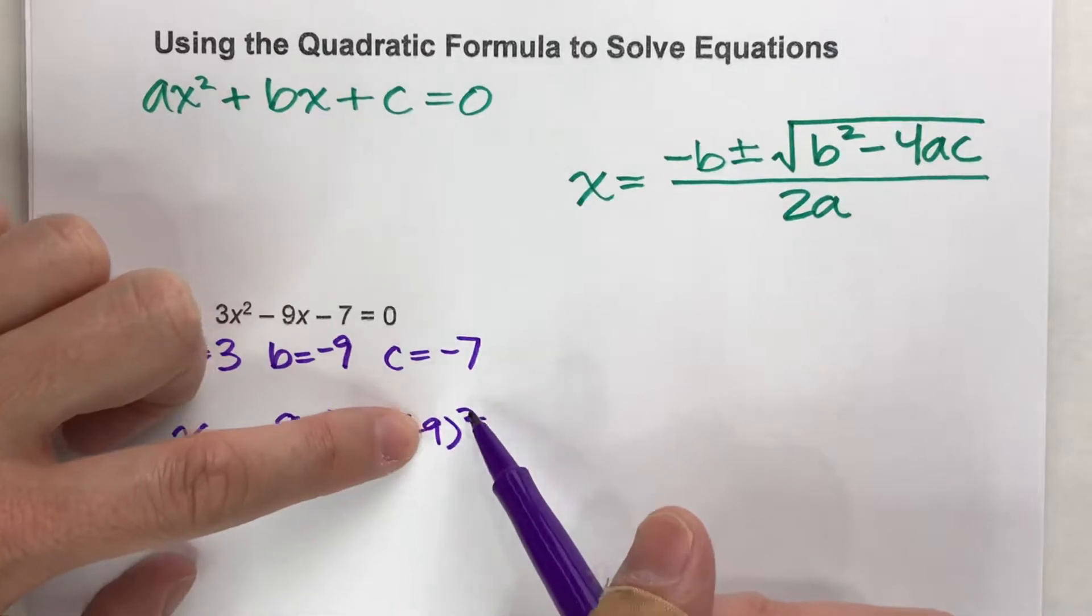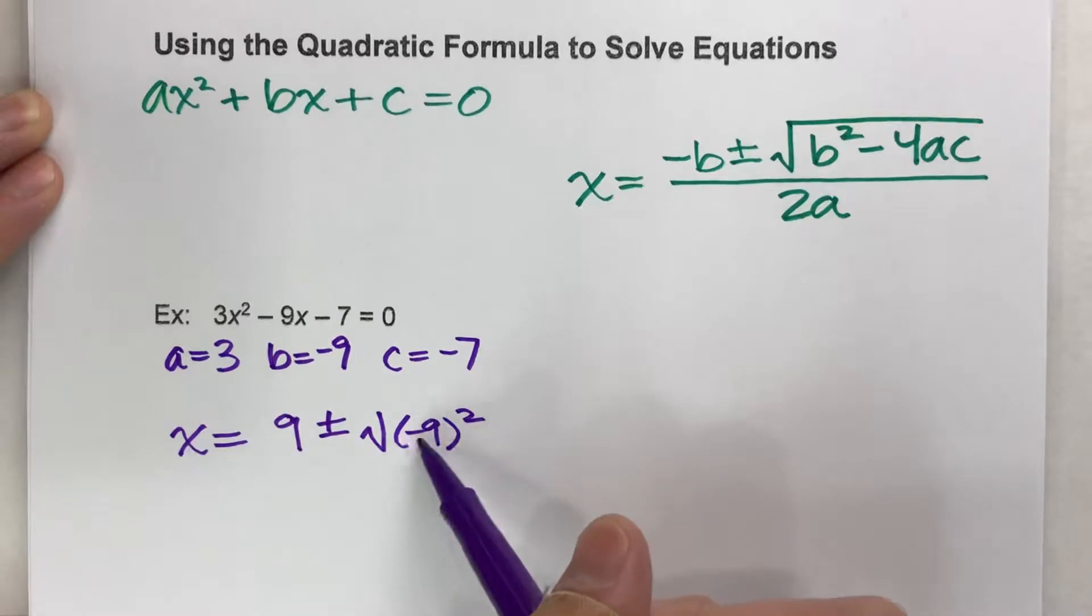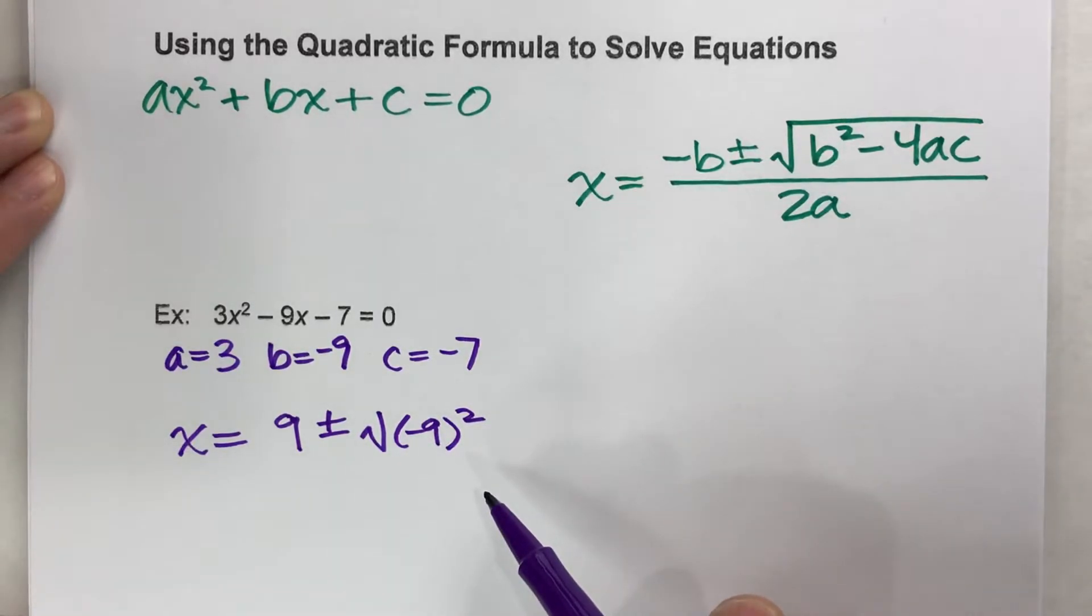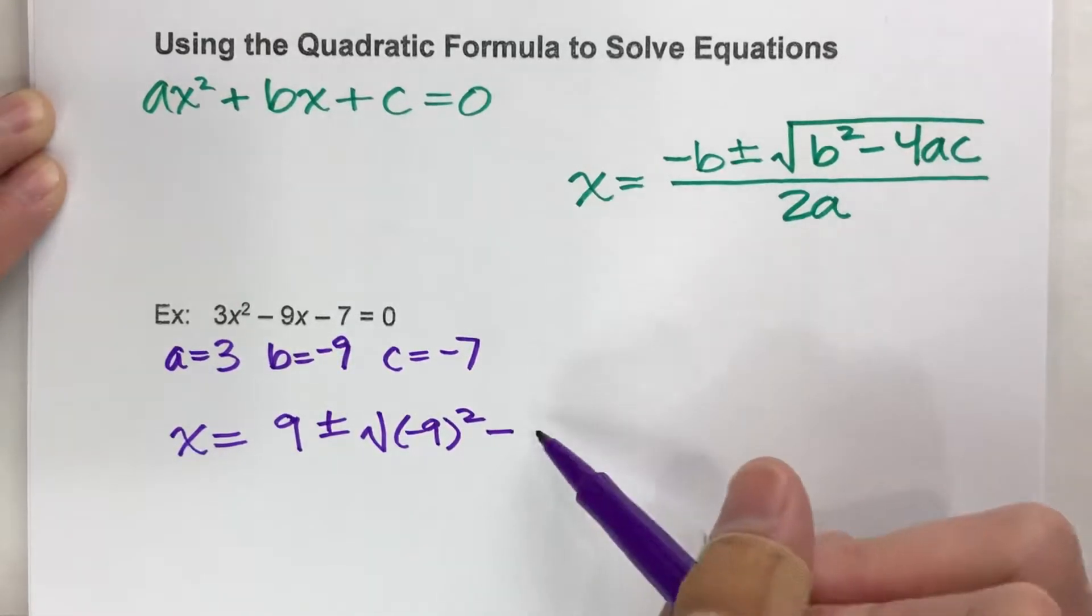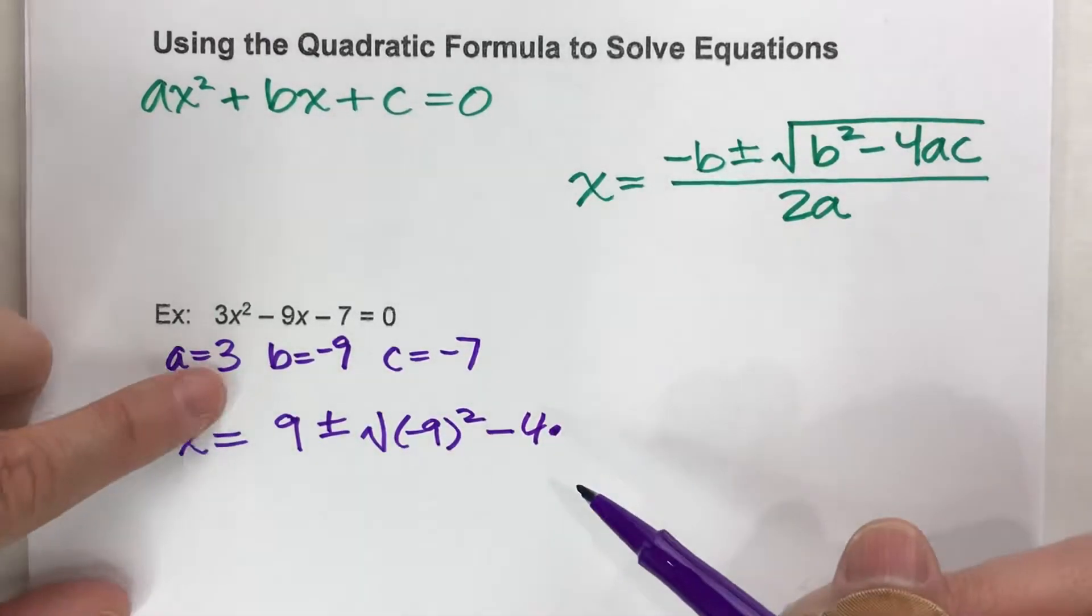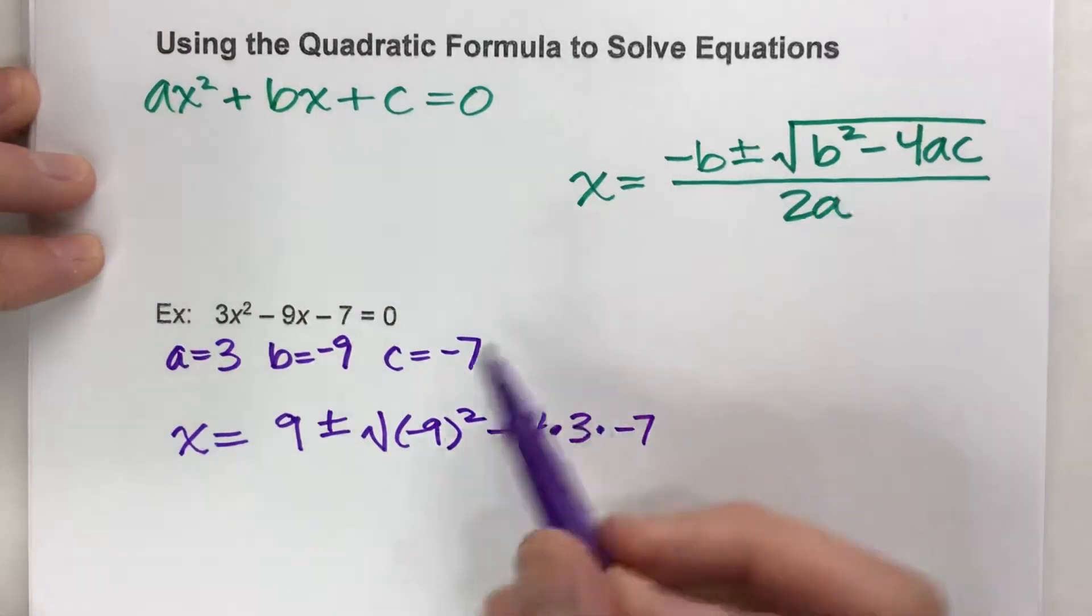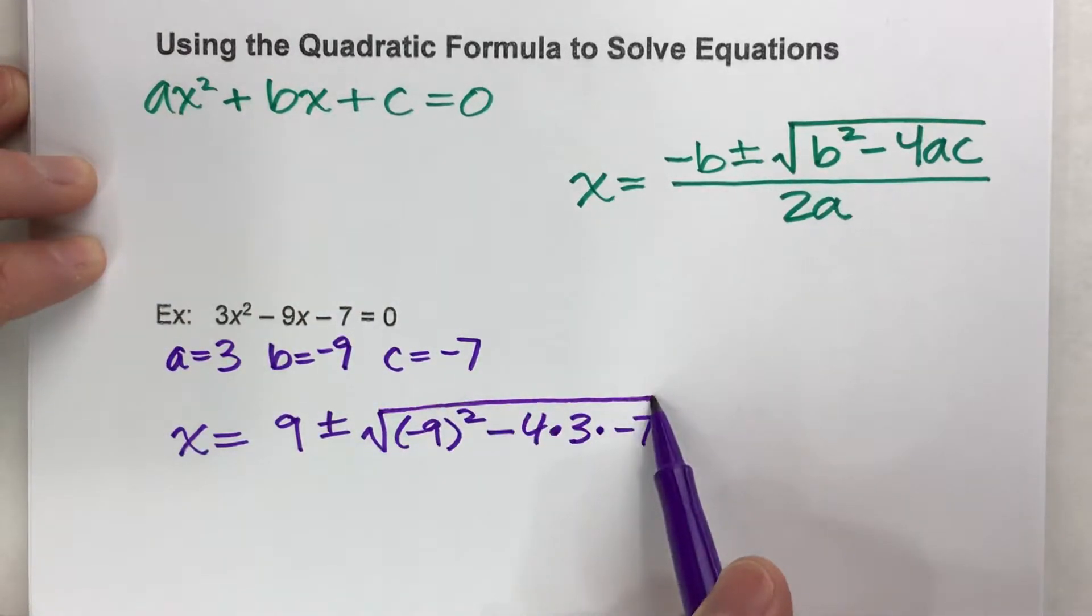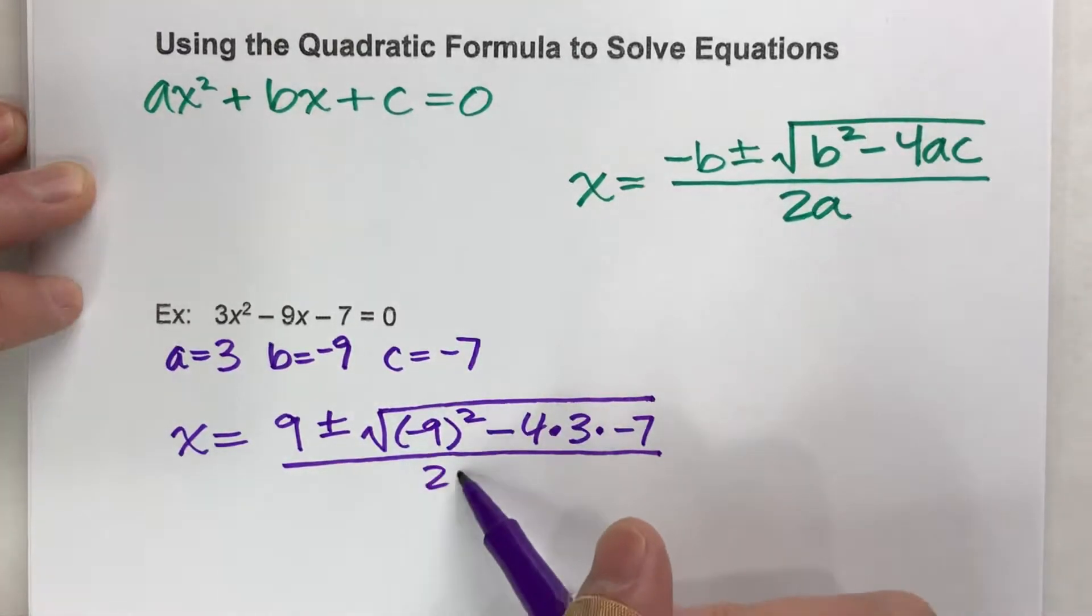Not just 9 squared, but negative 9 is squared. If you don't put in the parentheses, it's going to square the 9, but not square that negative sign. Minus 4 times a times c. 4 times a times c. All that's square rooted. And then that whole thing is divided by 2 times a. 2 times 3.